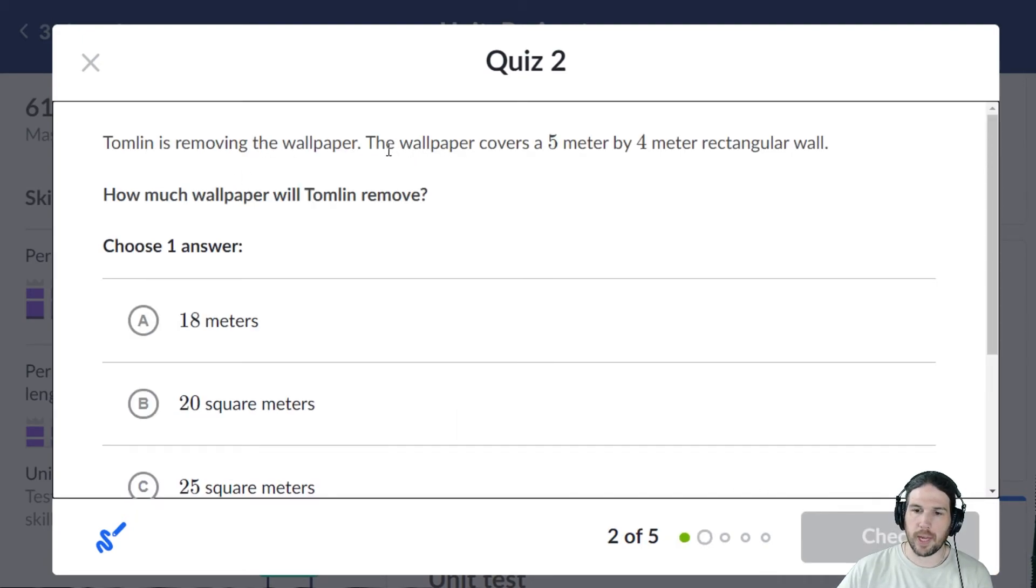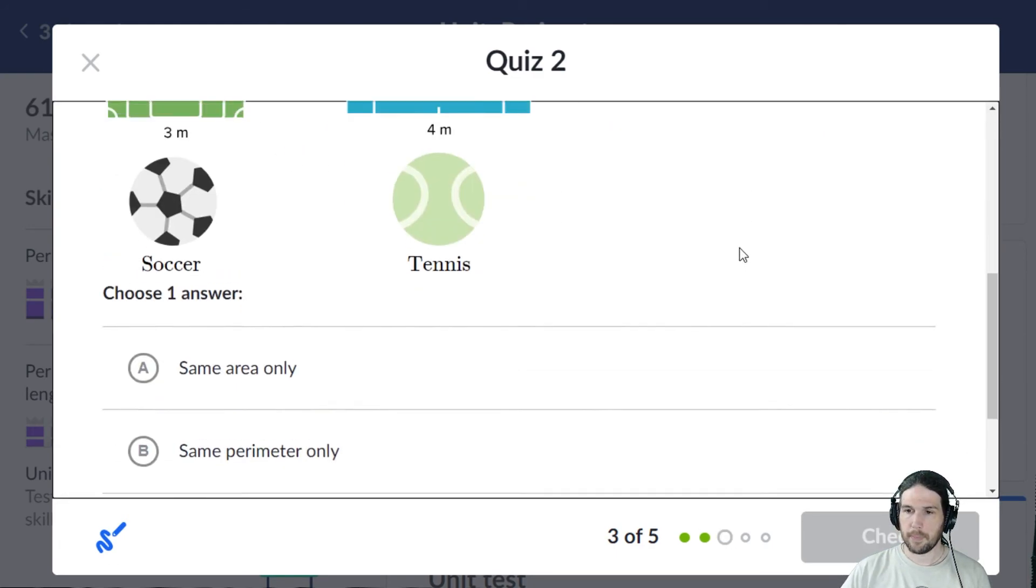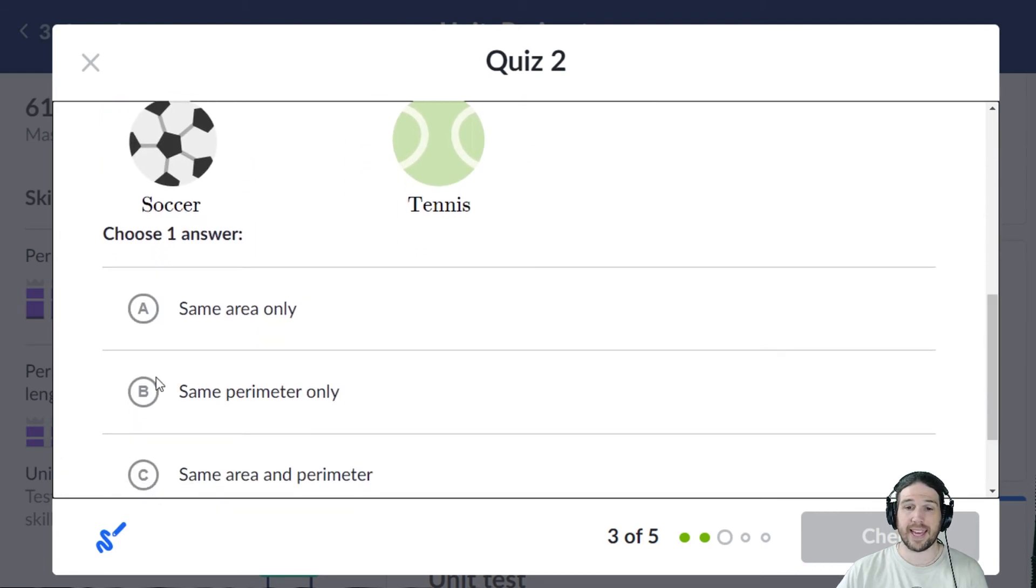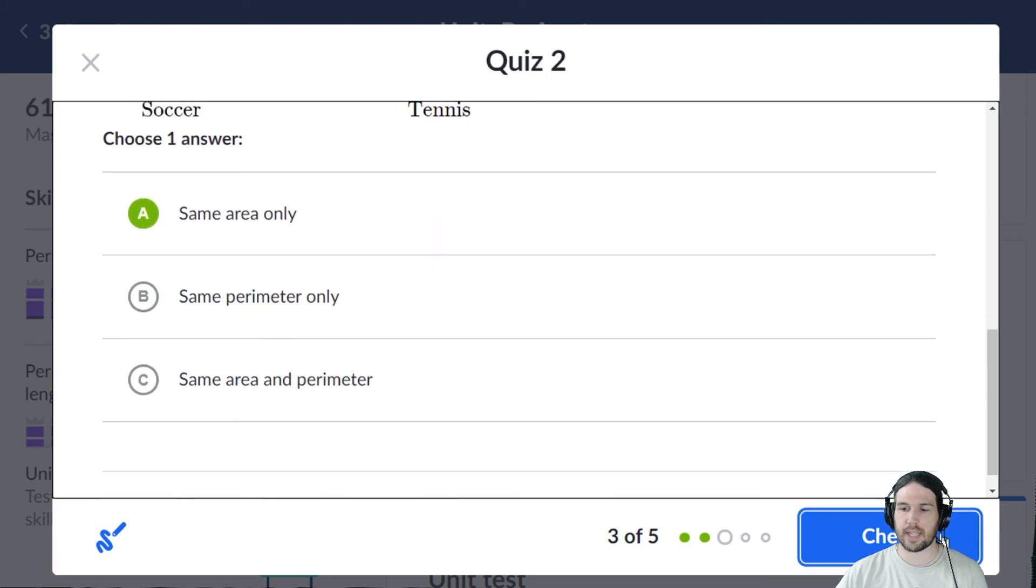Tomlin is removing wallpaper. The wallpaper covers five meters by four meters. How much wallpaper? Well, wallpaper is calculated in square meters. Five times four is 20 square meters. Do they have the same area, perimeter, or both? Well, let's see. Six times four is 24. Eight times three is also 24. So they at least have the same area. Let's look at perimeter. 12 and 12 is 24. 8, 9, 10, 11 is 22, so they only have the same area.